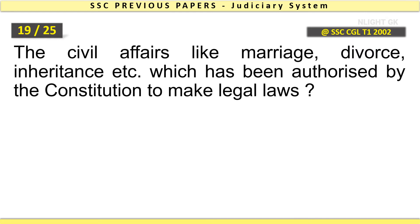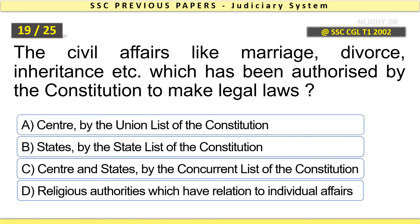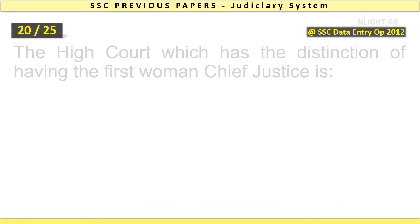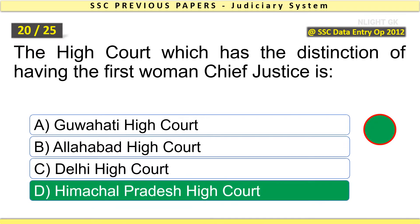Civil affairs like marriage, divorce, inheritance, etc. — which authority has been authorized by the Constitution to make legal laws? Answer: Center and States, by the concurrent list of the Constitution. The High Court which has the distinction of having the first woman Chief Justice is the Himachal Pradesh High Court.